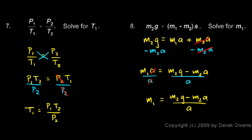And that's my answer. I could rewrite this with the numerator here with the M2 factored out. But I'll go ahead and leave it in this form. That's acceptable too. This is now solved for M1.